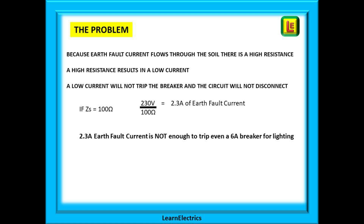If you have an earth fault on your 32 amp socket circuit whilst you are holding the kettle, then you have a big problem. The breaker will not disconnect. One solution, as we all know, is to install RCDs, and we will look at this.